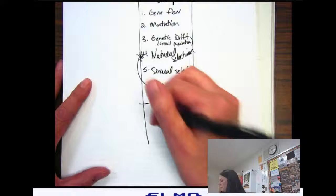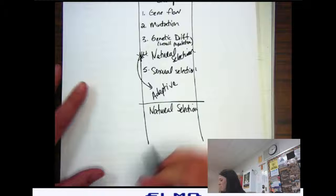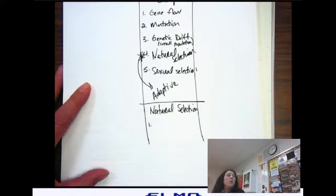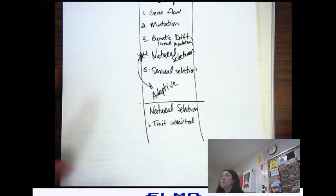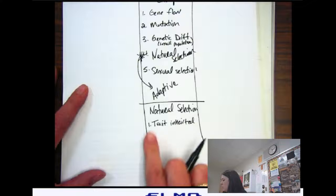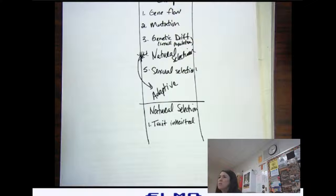So looking at natural selection, we have some things that have to happen first before natural selection can occur. So first, we need the trait needs to be inherited, or it needs to be a genetic trait. If it's a trait that's not inherited, natural selection can't work on an acquired or a trait that you get from your environment.